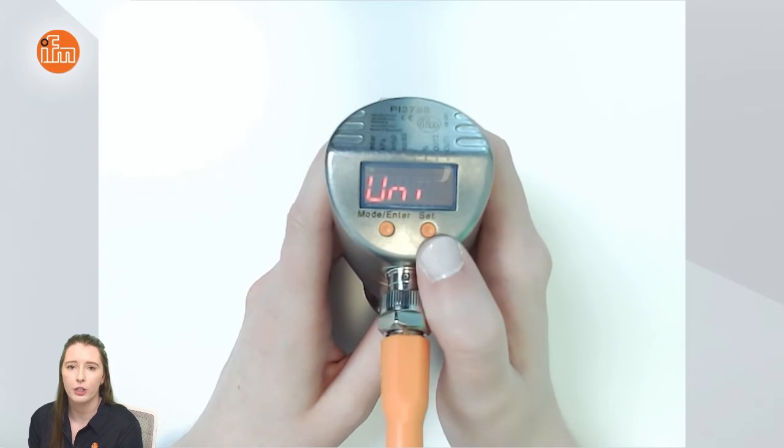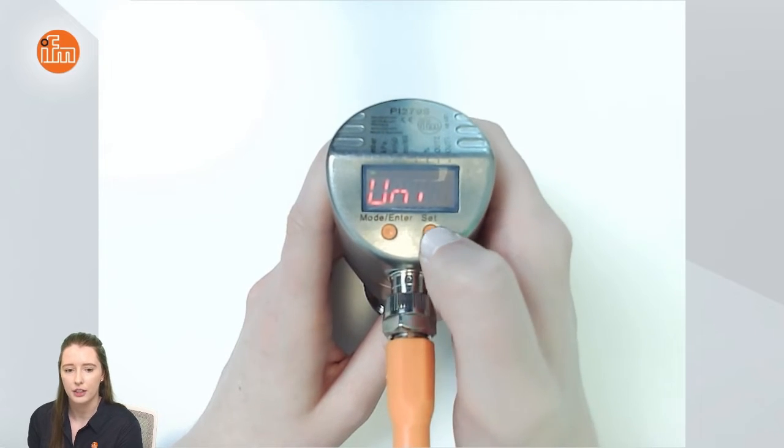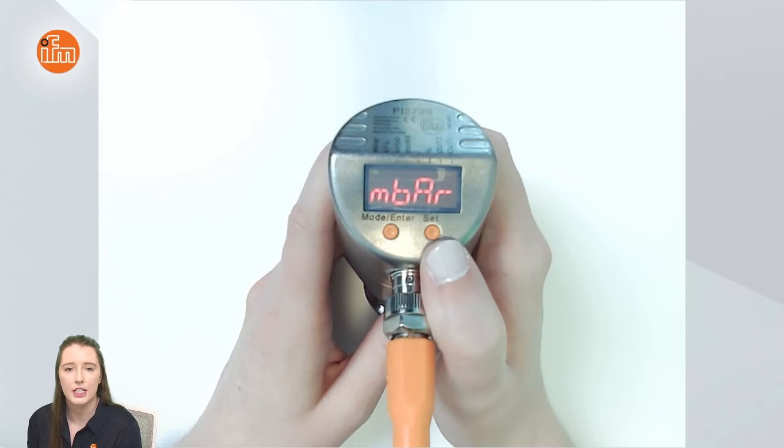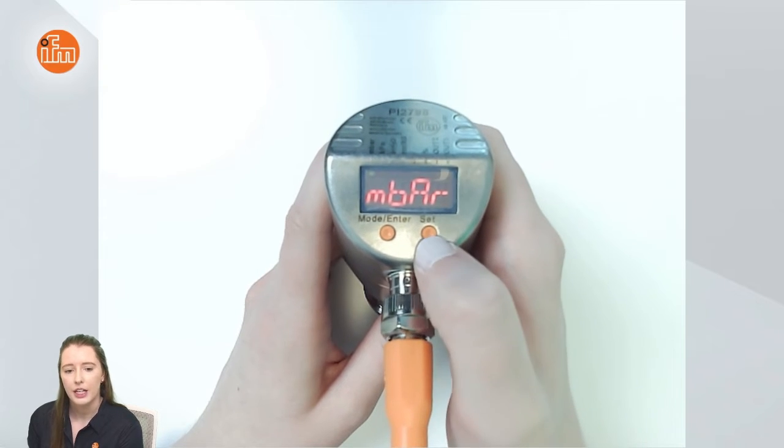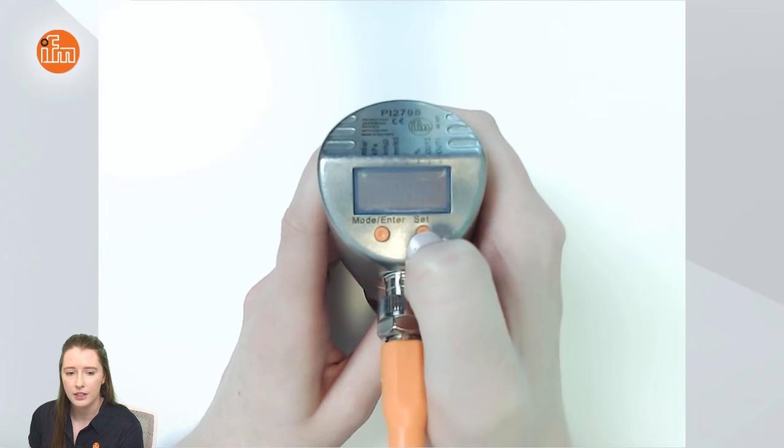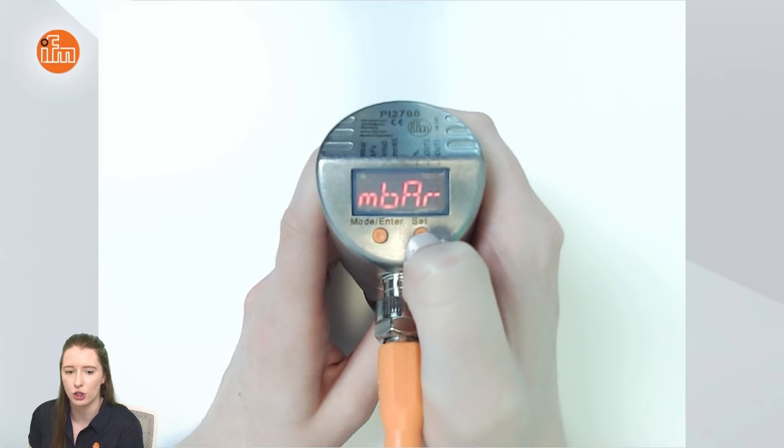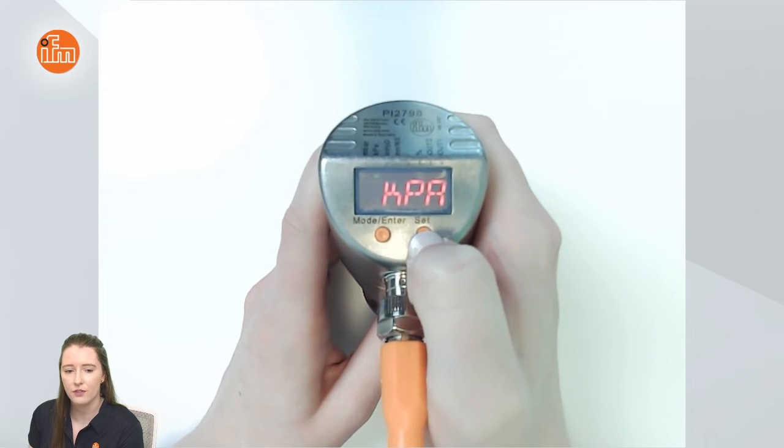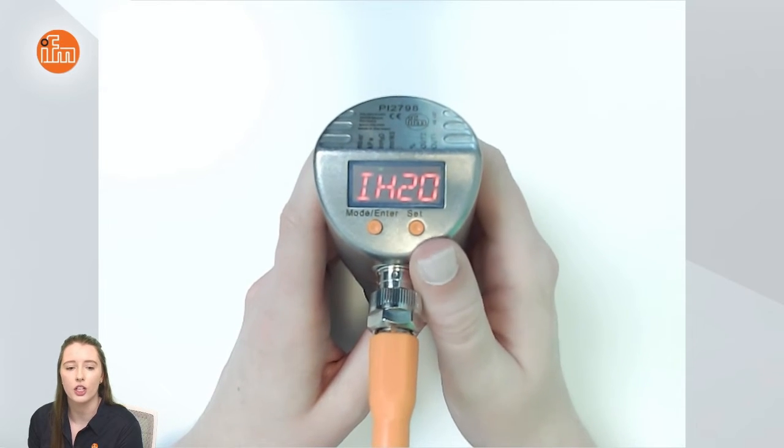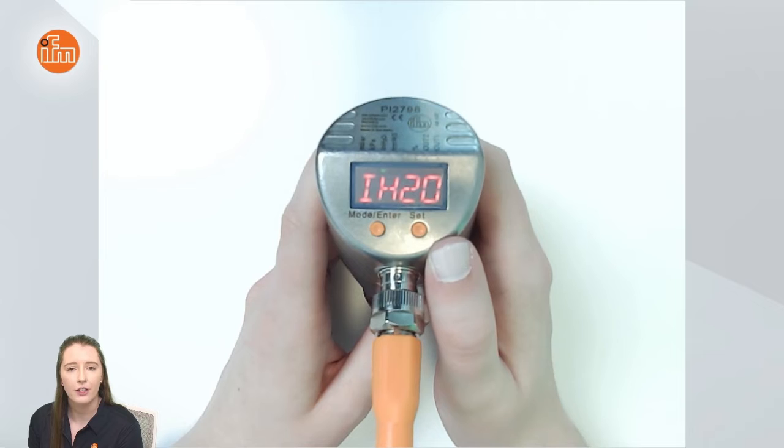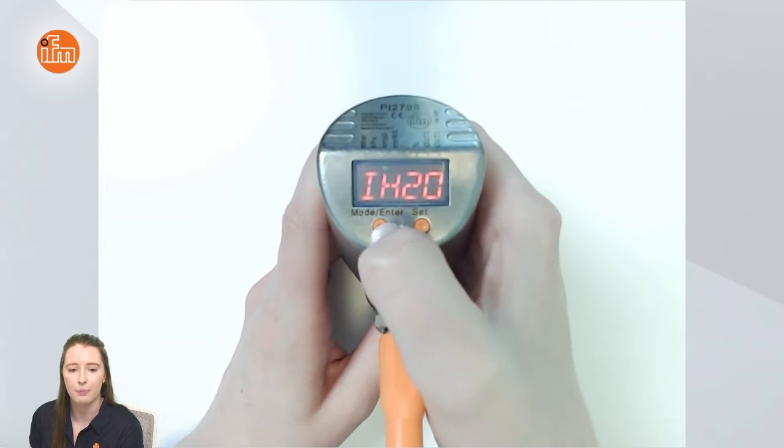Here you will see uni where you can change your units of display. So if I press set you'll see it as factory set for millibar and if I hold down the set button the display will begin to flash and then scroll through your options. So for today's video I'm going to set it for inches of water column. Once you have it on what you want to set it for you would press mode enter.